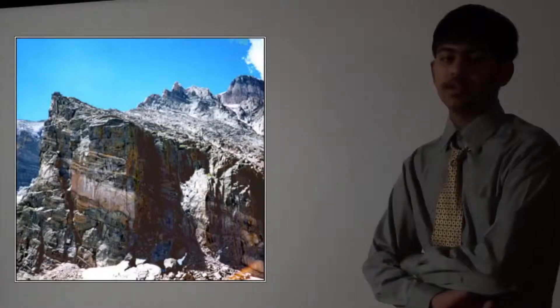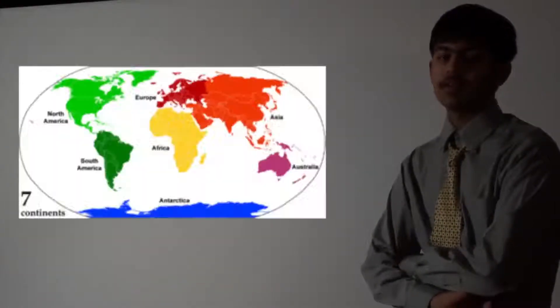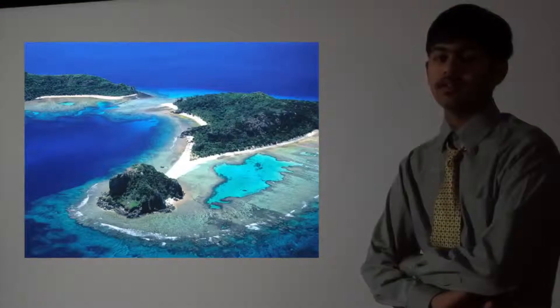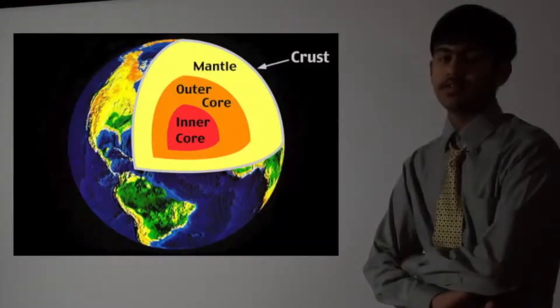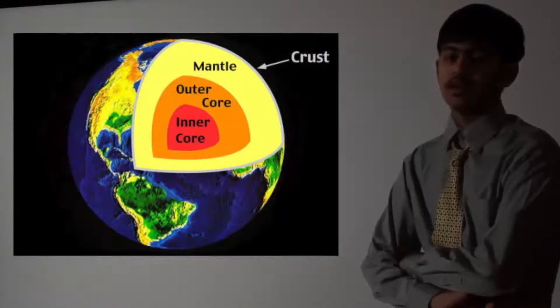All the features on the Earth are known as the geosphere. This includes continents, islands, and the layers of the Earth, which are the crust, mantle, outer core, and inner core. There are also maps to view the Earth in different ways.